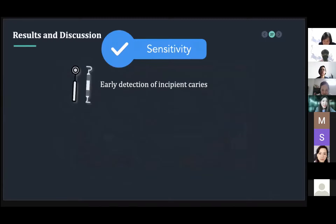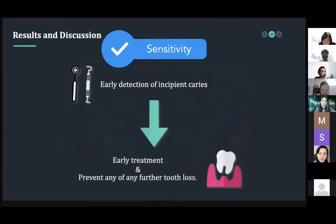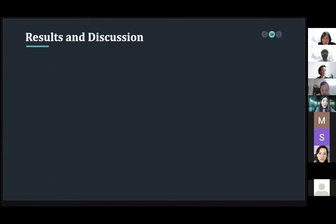A false negative may have significantly higher repercussions than false positive values. Undiagnosed and untreated decay could grow and lead to the loss of healthy tooth structures, possibly requiring endodontic therapy or extraction. While a false positive would lead to more conservative minimal interventions including topical fluoride applications and close monitoring of the lesion. Early detection of dental caries diagnosis is therefore important.